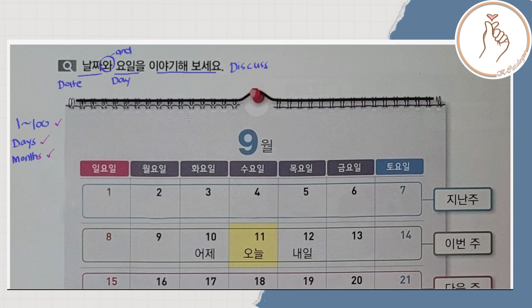It says here: Nalcha wa yuwiril iyagihebuseyo. So iyagihebuseyo means discuss or pag-usapan. Nalcha means date, yuwil means day. And wa here is the word 'and' in English. So i-discuss daw yung date and day.